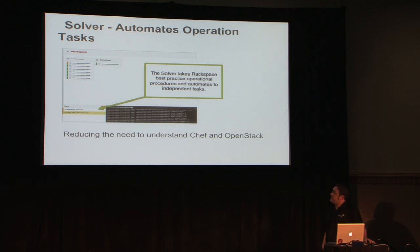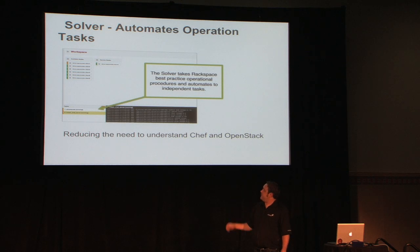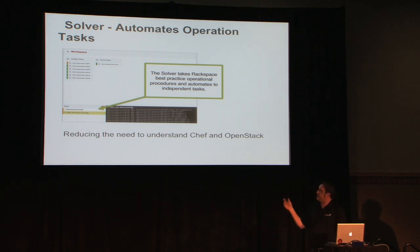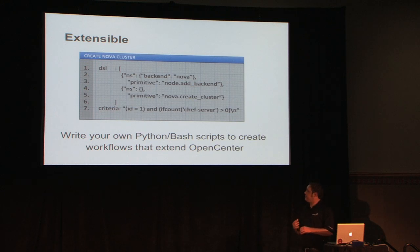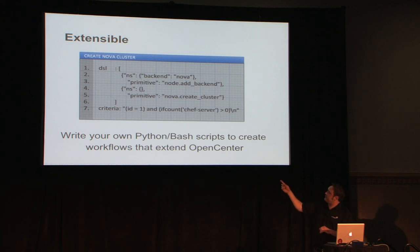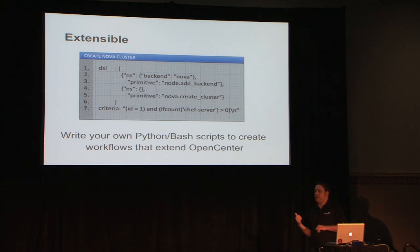The adventure system automates operational tasks — a combination of our support team working with customers and experience running OpenStack for customers. We've turned those into Python and Bash scripts that execute on any host and keep everything in sync. The system is also extensible; it has its own language that looks very similar to JSON. You can put in criteria — for example, if I do have a Chef server and my ID equals one, then I can create a cluster; if I don't have a Chef server, I can't create a Nova cluster and the adventure will fail. That's OpenCenter at a glance.